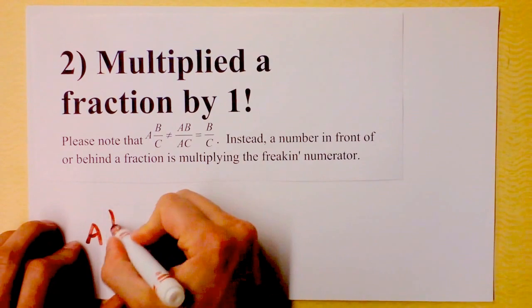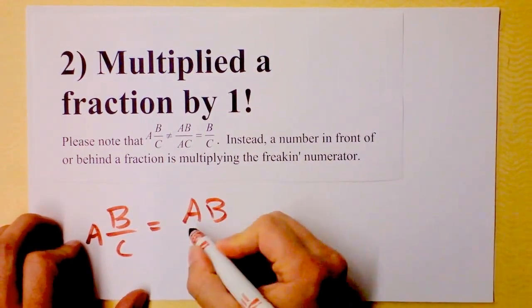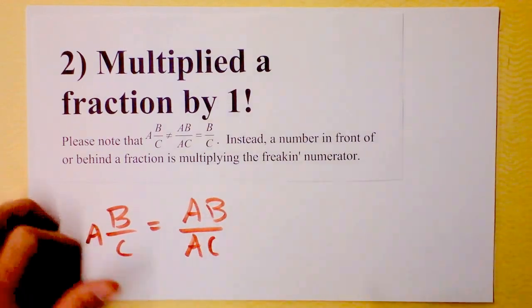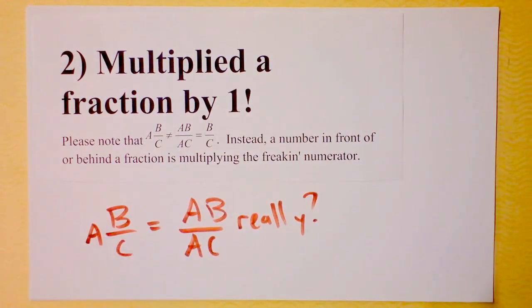If I have A times B over C, and you were thinking that means A times B over A times C. Really? Really? Did you think that would be the case?